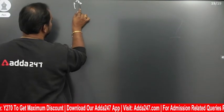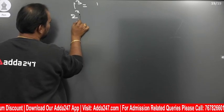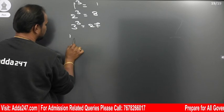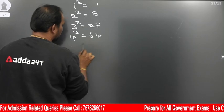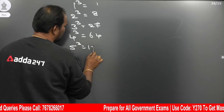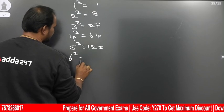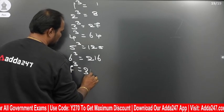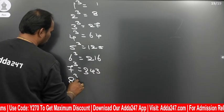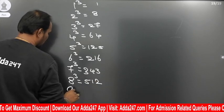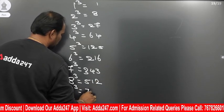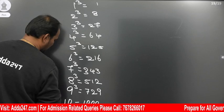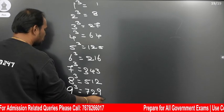1 cube is 1. 2 cube is 8. 3 cube is 27. 4 cube is 64. 5 cube is 125. 6 cube is 216. 7 cube is 343. 8 cube is 512. 9 cube is 729. 10 cube is 1000.